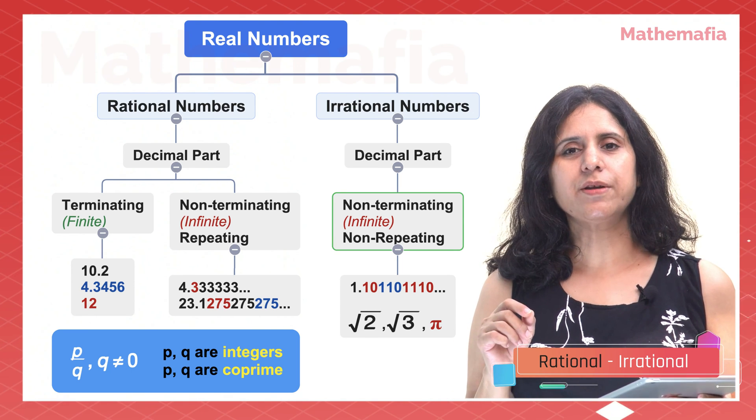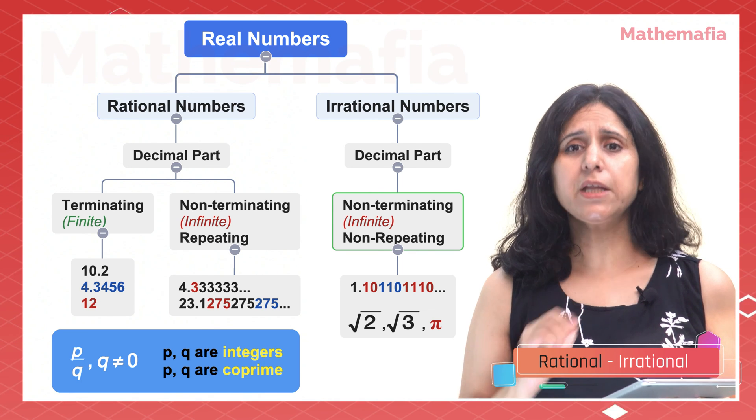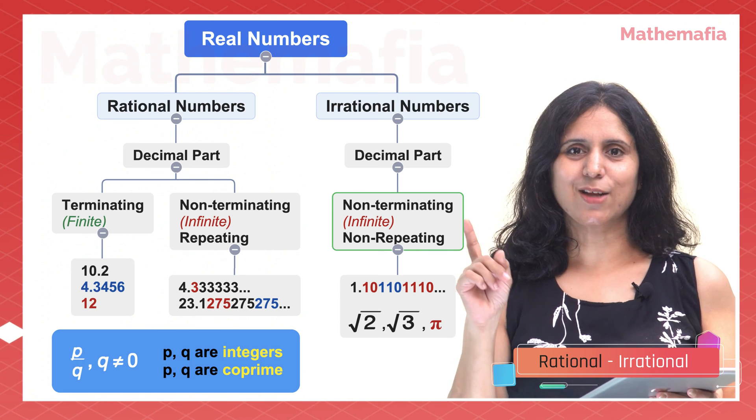Other common examples of irrational numbers are root 2 and root 3. In fact, the square root of any prime number is going to be irrational. You want to know the proof of this? Just click on the link above.